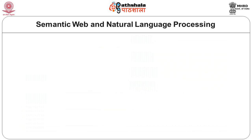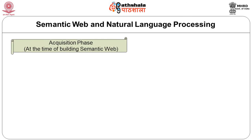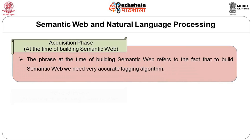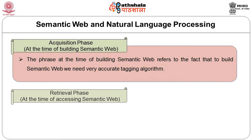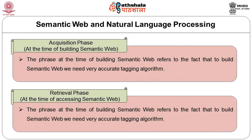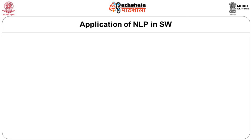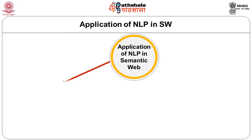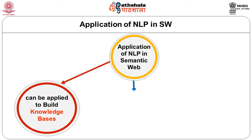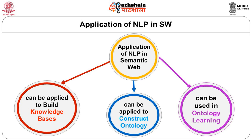As a last part of this module, we talk about the relationship between semantic web and natural language processing. NLP can help the semantic web in two phases: the acquisition phase — at the time of building the semantic web — and the retrieval phase — at the time of accessing the semantic web. Some applications of NLP in semantic web are: it can be applied to build knowledge bases, to construct ontologies, and can be used in ontology learning.